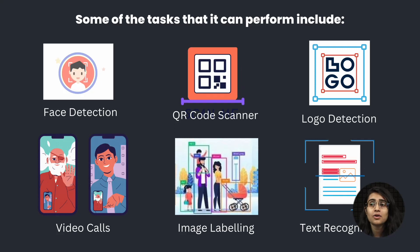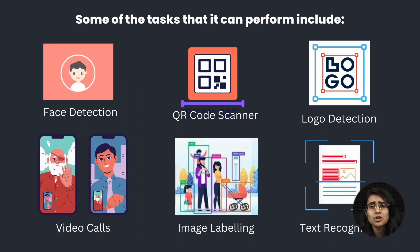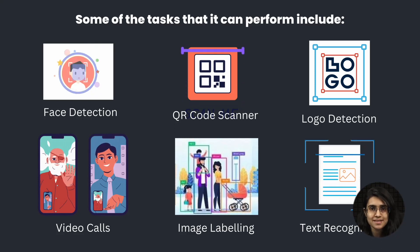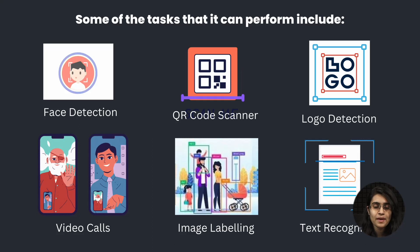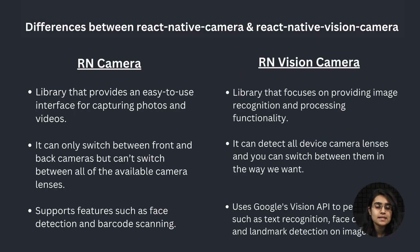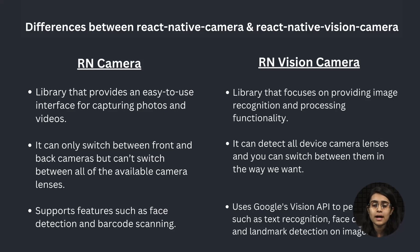Then there is location detection, where it finds a particular location, detects it, and returns it. There are many features like this. As a React Native developer, you might already be using a package known as React Native Camera. Let's see what the differences are between React Native Camera and React Native Vision Camera.